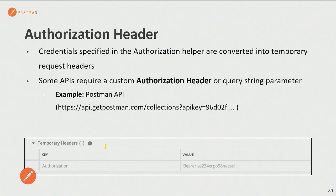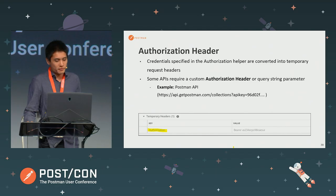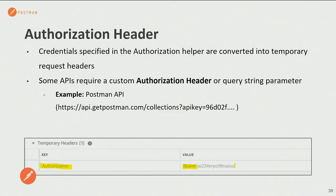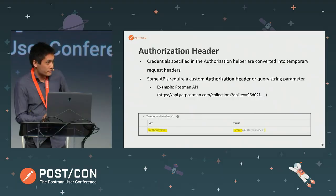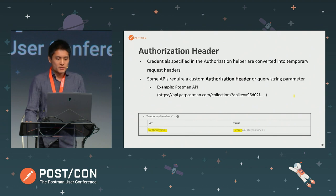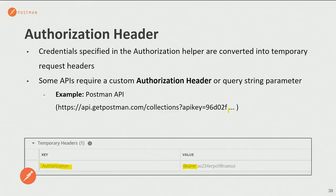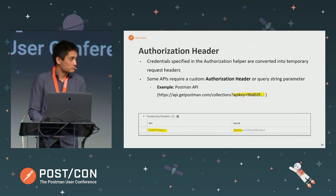The credentials you specify from the authorization helper are converted into a temporary request header — usually the authorization header, where the value depends on the method. For example, with a bearer token, the value would be 'Bearer' followed by the token you specify. These temporary headers aren't saved in the request, so it doesn't expose your credentials. Some APIs require a custom authorization header or query string parameter — for example, the Postman API requires either a query string of 'api_key' followed by your key, or the 'X-API-Key' header.